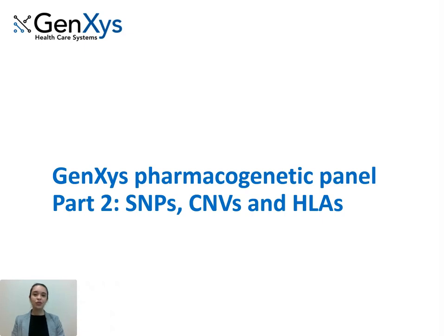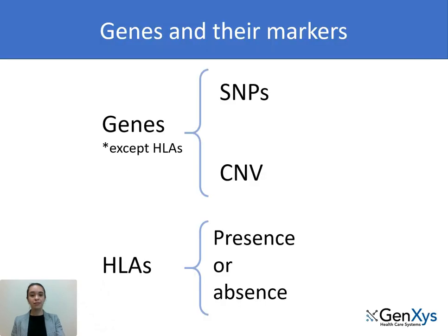Hi! In this video, you'll learn about the SNPs, CMBs, and HLAs included in the Genetsis Pharmacogenetic Panel and their role in optimizing drug therapy. In our previous video, we talked about the different genes included in the Genetsis Pharmacogenetic Panel. Here, we will discuss the markers we use to identify genetic changes that may affect a patient's response to a drug.